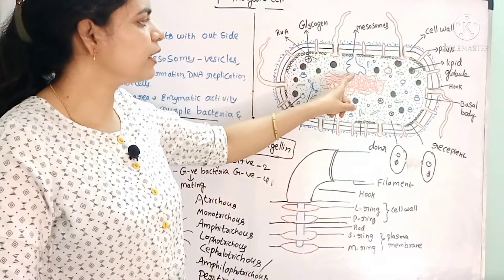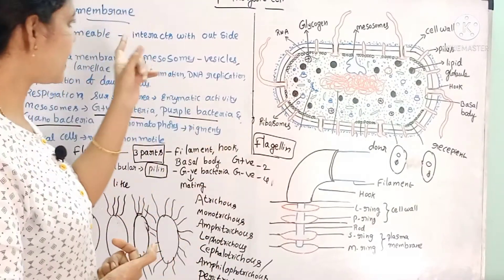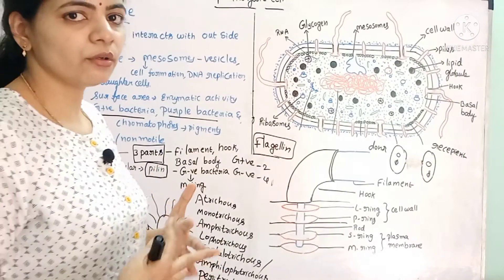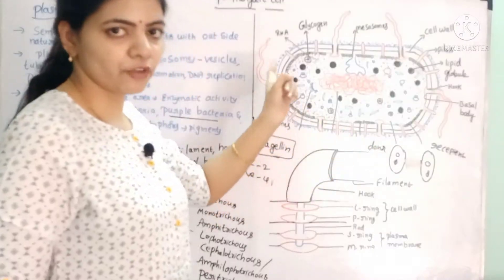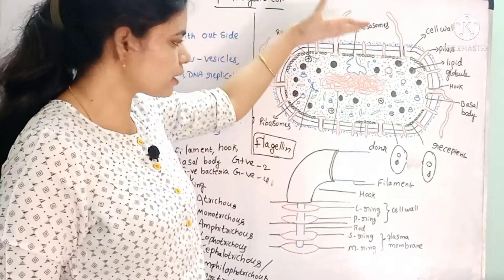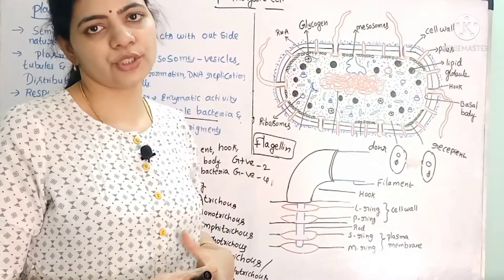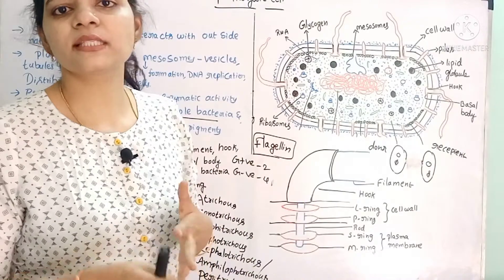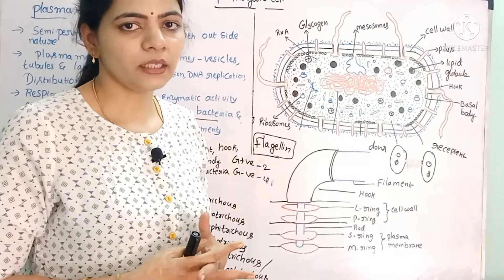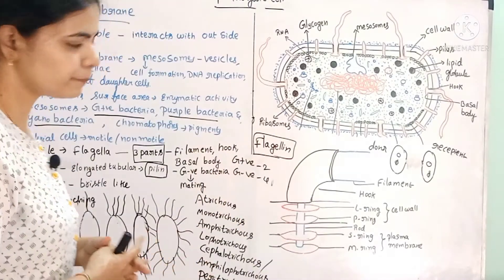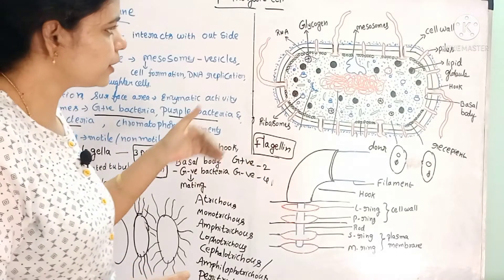In this plasma membrane, we have finger-like invaginations. We have a mesosome setup. The plasma membrane interacts with the outer environment, allowing particles and molecules to enter. It allows only small molecules — that is its semi-permeable nature.